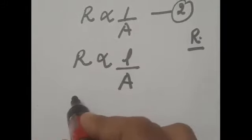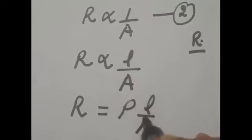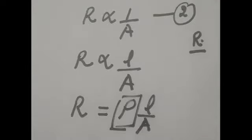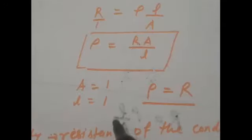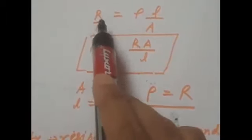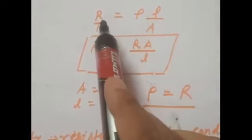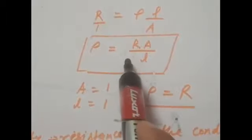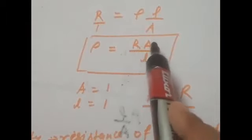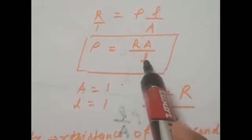When we remove the proportionality constant, we keep a constant rho here. This rho is called the specific resistance or resistivity of the material. The specific resistance or resistivity can be calculated as R = ρL/A. Taking rho to one side and cross-multiplying, we get ρ = RA/L, where R is the resistance, A is the cross-sectional area, and L is the length of the conductor.